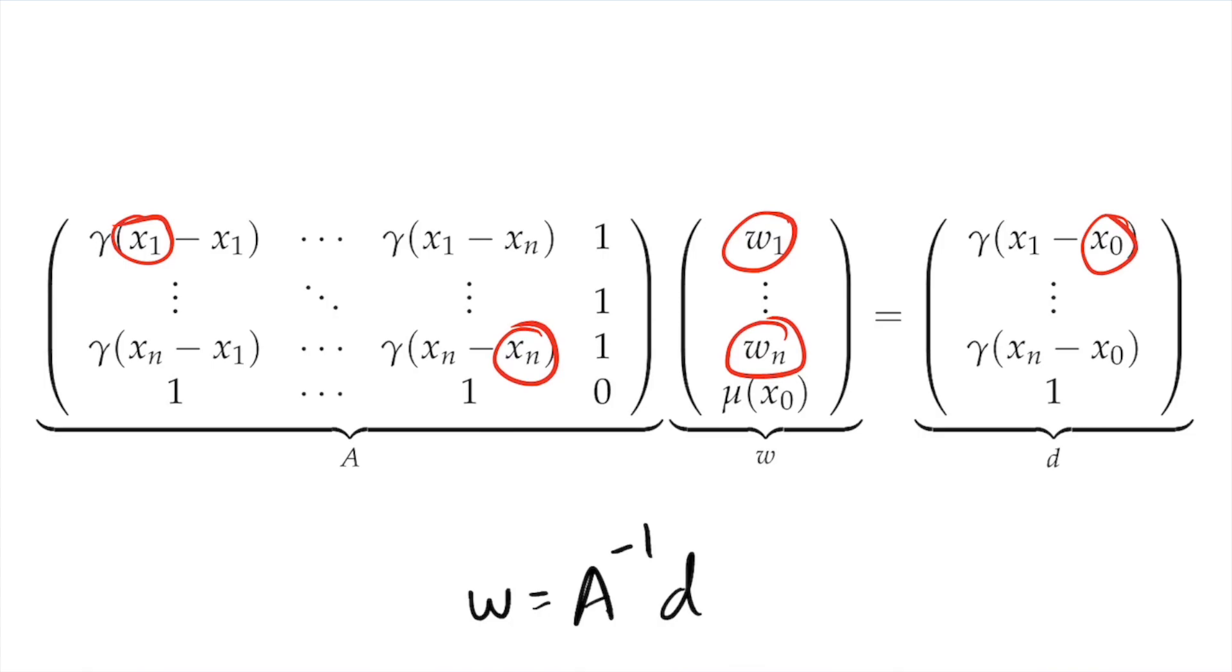Finally, there are some computational aspects that you need to take into account if you use kriging. Matrices W and D here are just vectors, but matrix A is square, and it can be very big if you use a large search radius. Since inverting a matrix is computationally expensive and this has to be done once for every interpolated point, kriging can be much slower than other interpolation methods. So, try to use a relatively smart search radius, but this radius should still always contain other sample points.